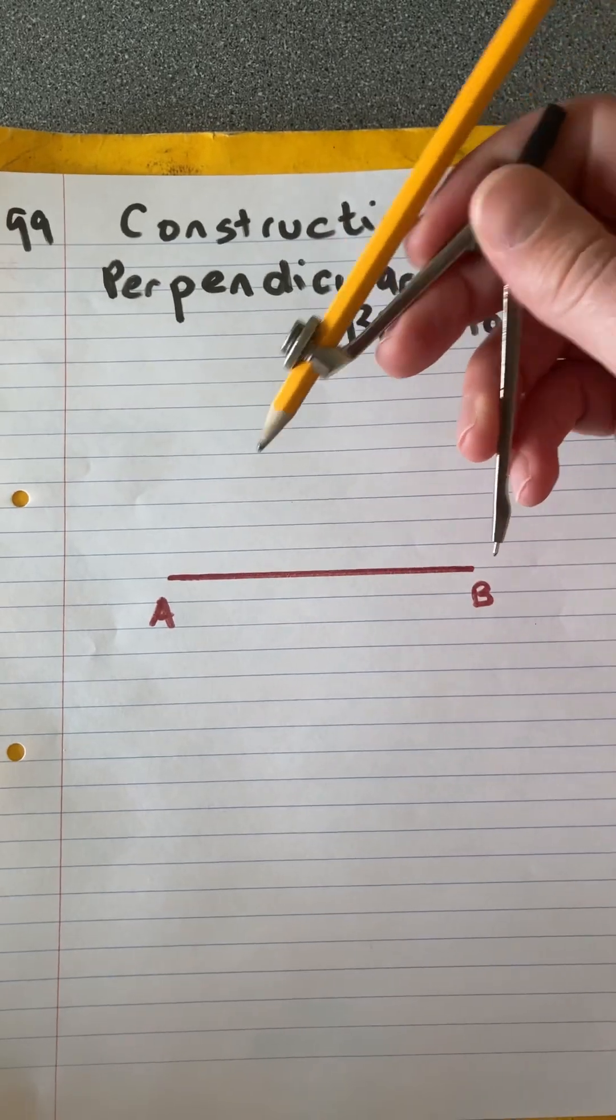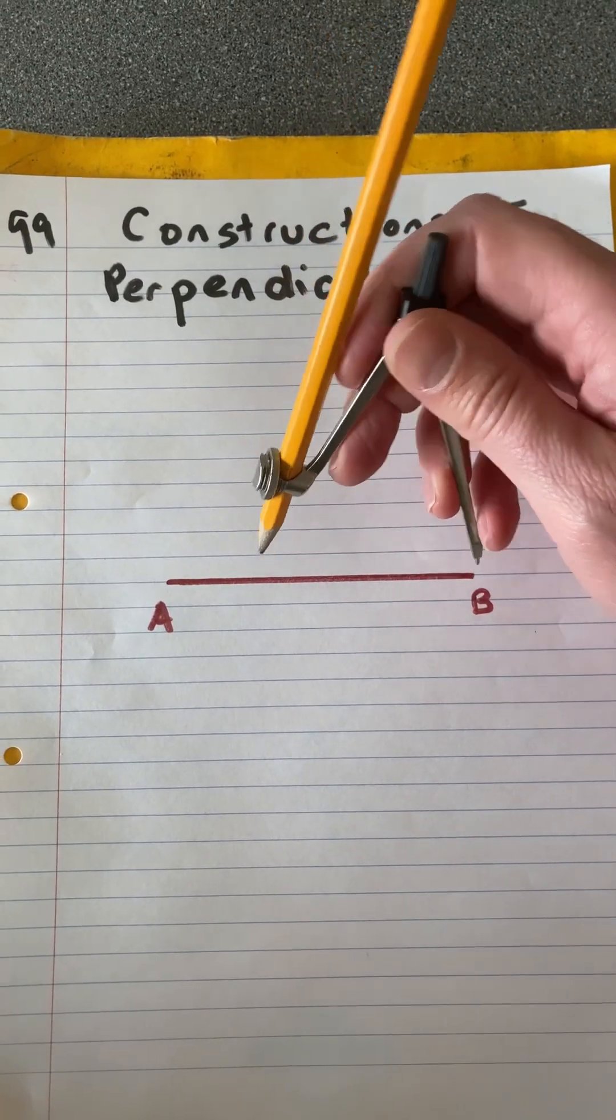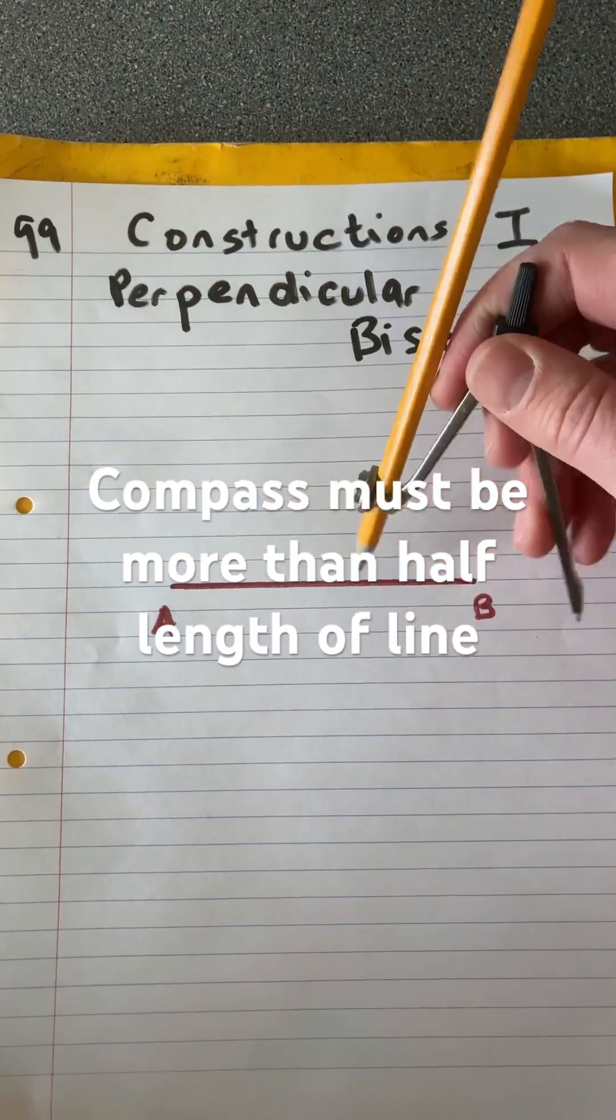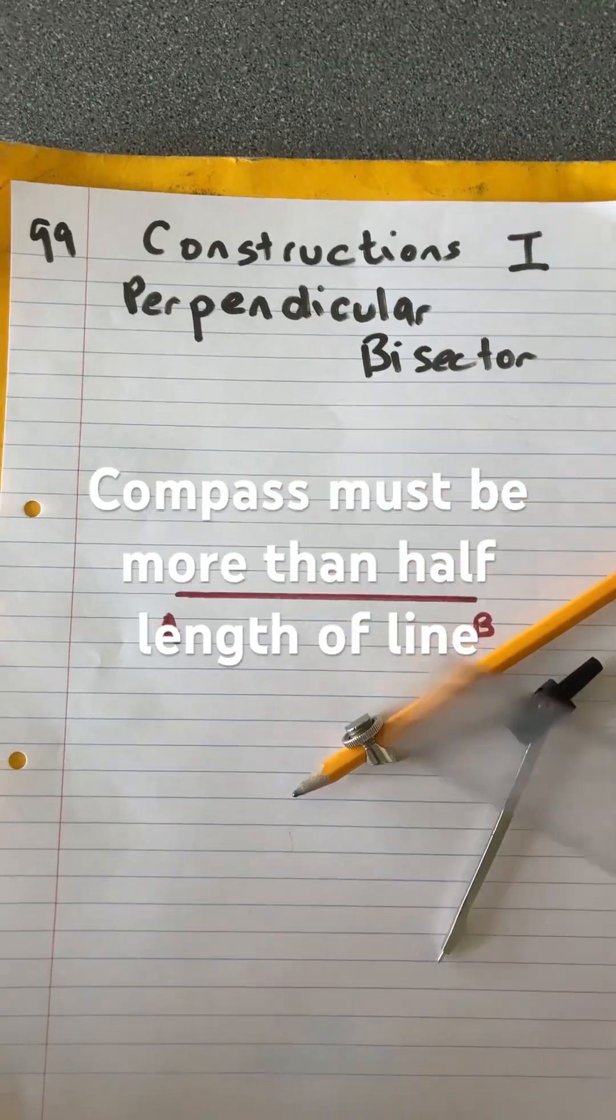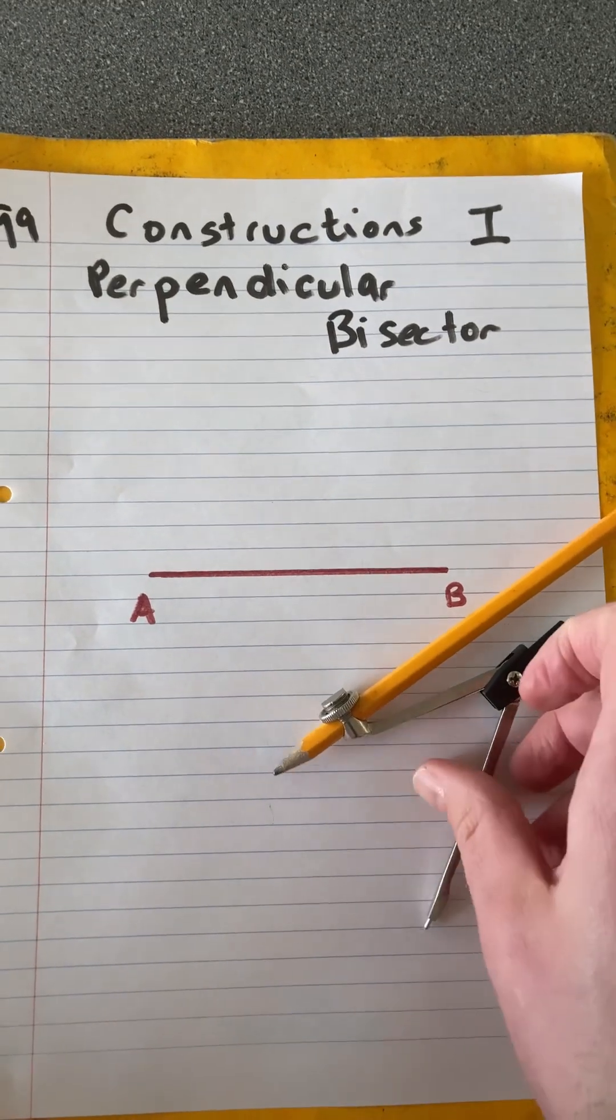When you set the compass to the correct length, it can be anything as long as it is more than halfway, otherwise it won't work. So this line is 10 centimeters, so as long as that is set to more than 5, we'll be fine.